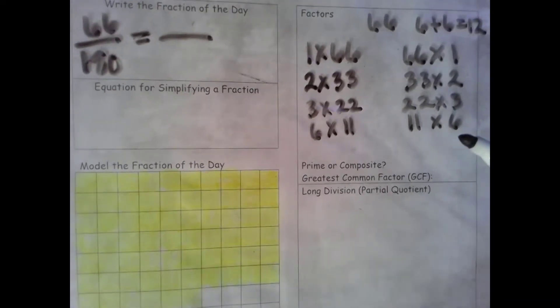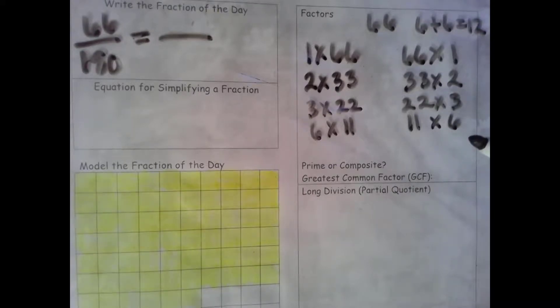So we try 7. 7, 14, 21, 28, 35, 42, 49, 56, 63, 70. 66 is not in that list so 7 is not a factor. We try 8. 8, 16, 24, 32, 40, 48, 56, 64, 72. 66 is not in that list so 8 is not a factor.